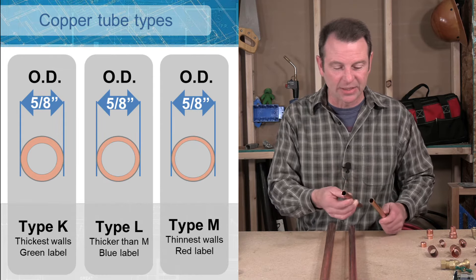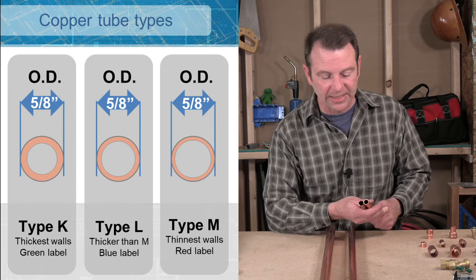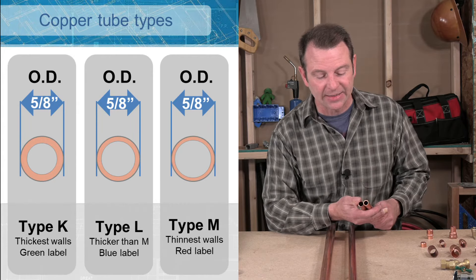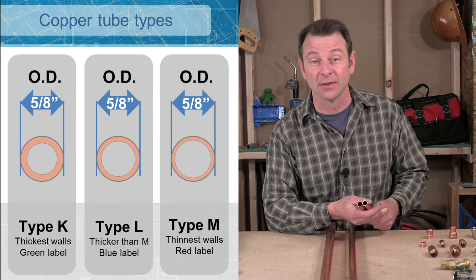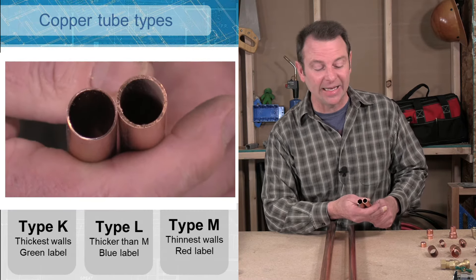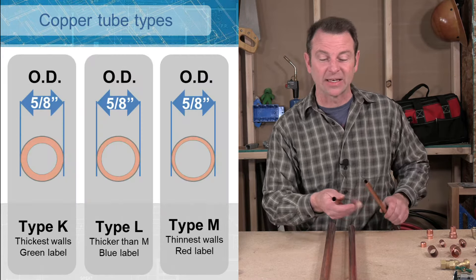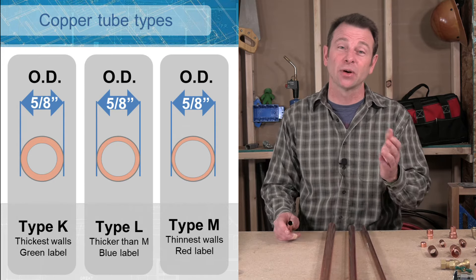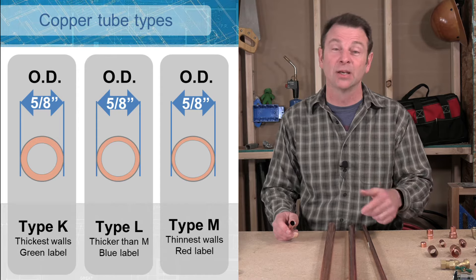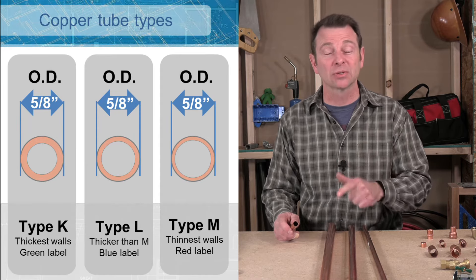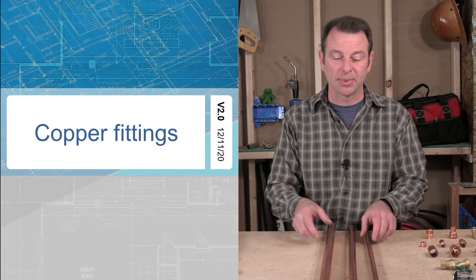I have here a type M, which is the thinnest, and I have a type L here. If I put them next to each other, you might be able to see that this type M is just a little thinner than my type L. If you go to a type K, it's even thicker than my L. I don't have a sample of that here today. Most of your type K is found in commercial installations. You'll see a lot of L and mostly M in residential building. So there's the basic on our copper pipe.